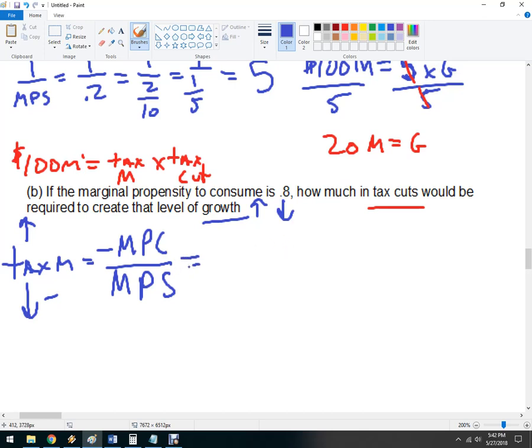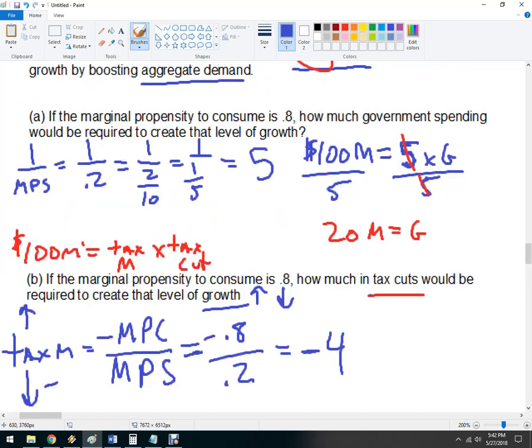So, negative MPC is negative 0.8 over the MPS, which is 0.2. And you can just do that here, and we've got negative 4. Now, if you look at the two multipliers, you can see that the tax multiplier is negative, and it's 1 minus whatever the MPS is. So, the trick here to remembering what this tax multiplier is, is it's always negative, and it's 1 minus the fiscal spending multiplier.